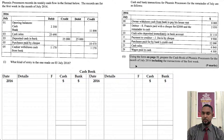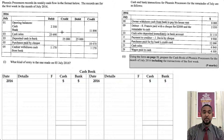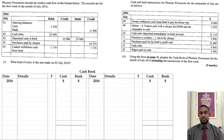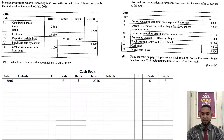And what do they want? For nine marks, using the form on page 11, prepare the cash book of Phoenix Processors for the month of July, including the transactions in the first week. That's nine marks — nine times one and a half is thirteen and a half minutes, so you're looking at about 13 to 14 minutes for this cash book. I've basically recreated the cash book format, so you don't have to worry about it.